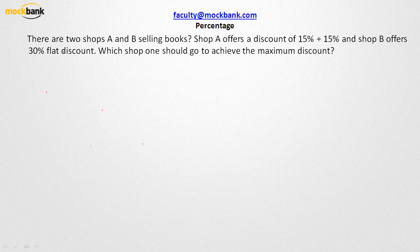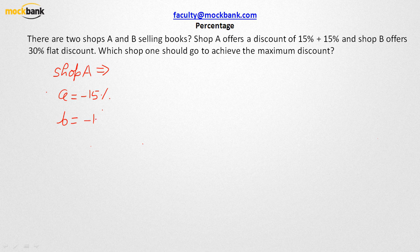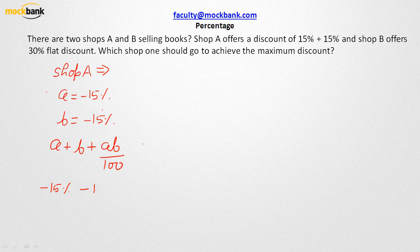Let's talk about Shop A. Shop A offers 15% plus 15% discount. So in this case, A is negative 15%. Why do we write it as negative 15%? Because this is a discount — discount is nothing but a decrement. B also comes out as negative 15%. So as per the formula for cumulative percentile change, that comes out as: negative 15% plus another negative 15%, plus negative 15 times negative 15 over 100%.